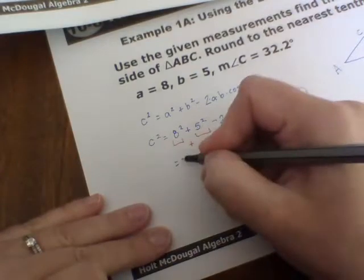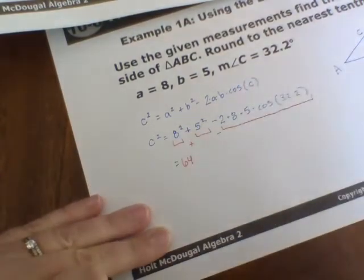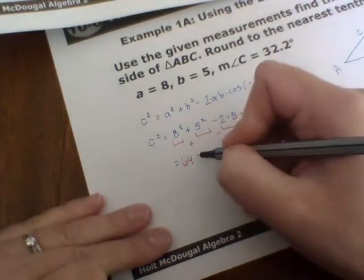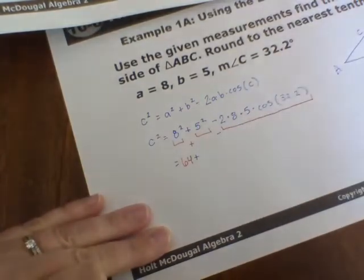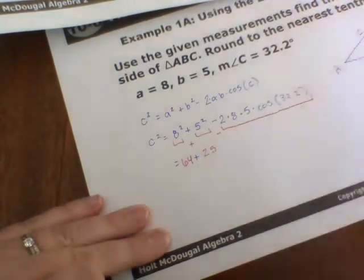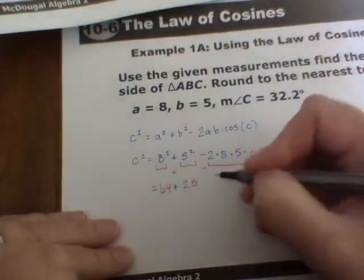8 squared is 64, and then 64 is going to be added to 25. And then to subtract from that,